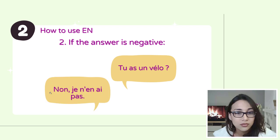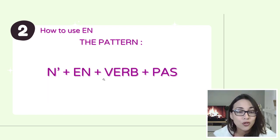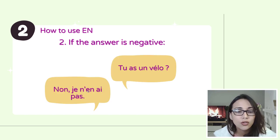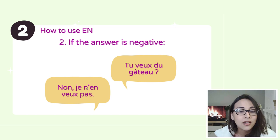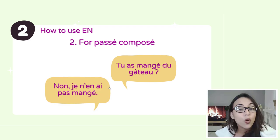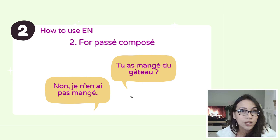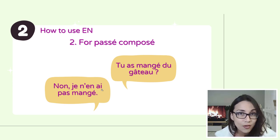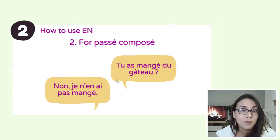So the pattern for negation is n'en, then verb, then pas: je n'en ai pas, je n'en veux pas. But what about passé composé, the past tense? Tu as mangé du gâteau? Non, je n'en ai pas mangé. The pattern for passé composé is: n'en + auxiliary verb + pas + past participle. That is the pattern for passé composé.